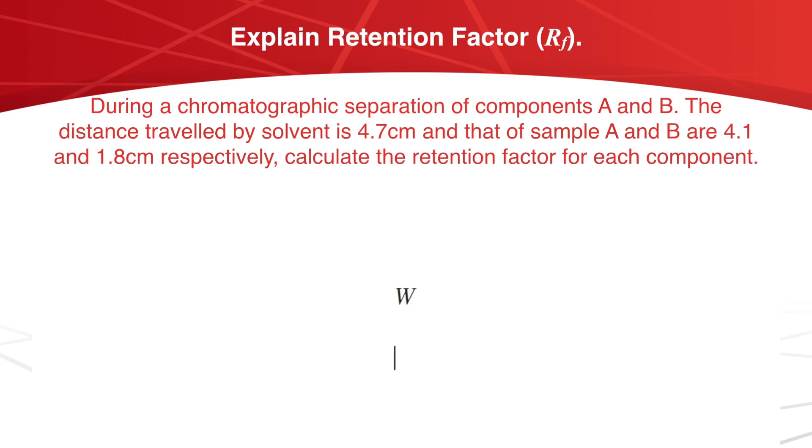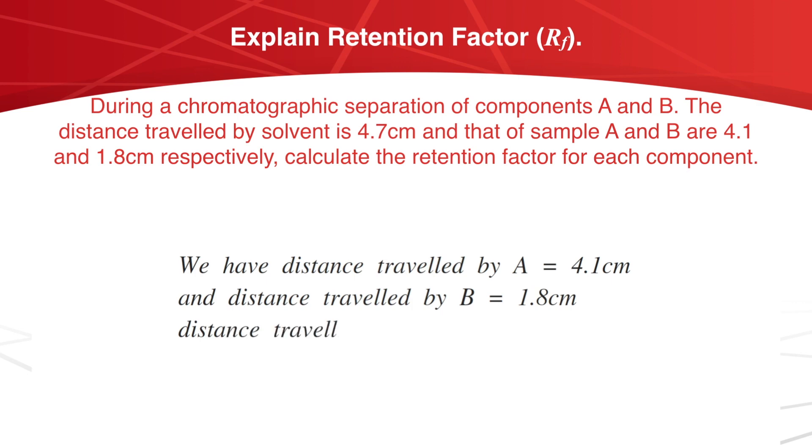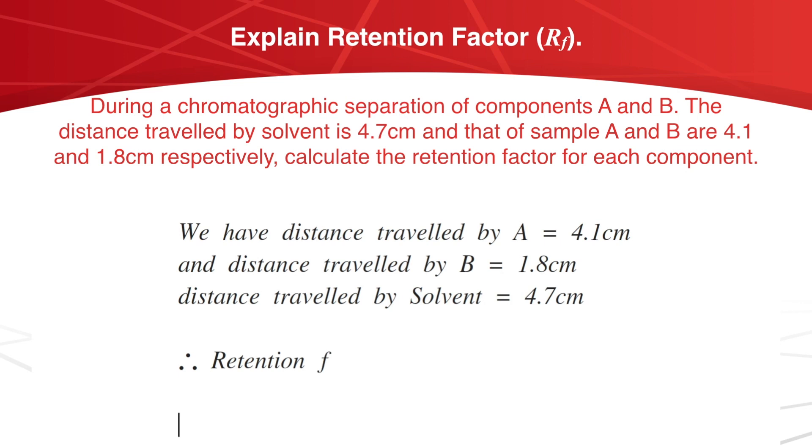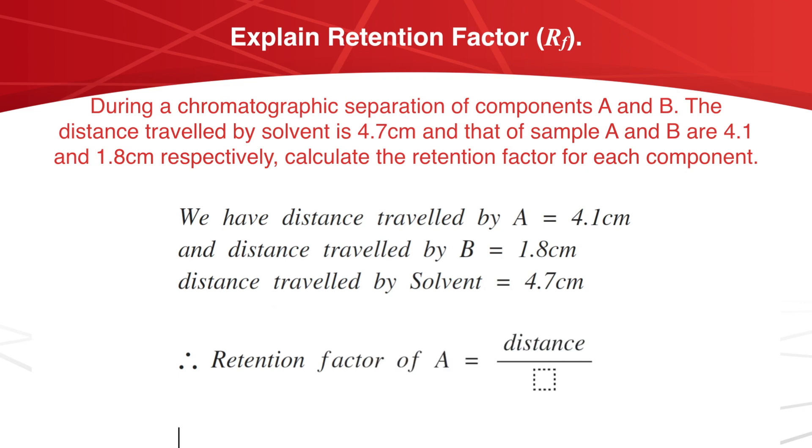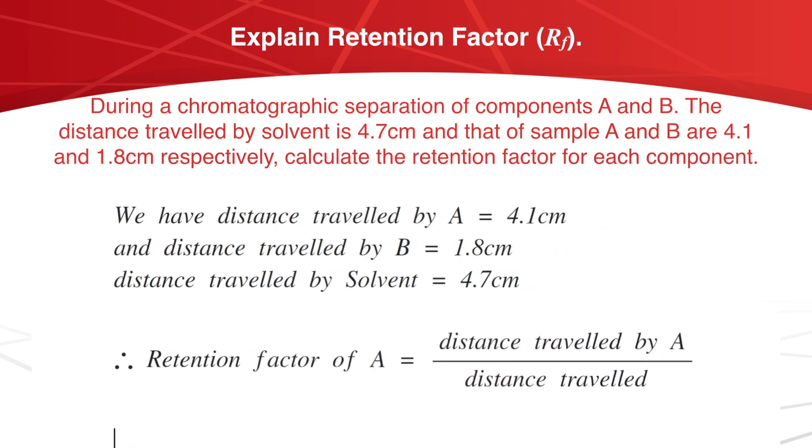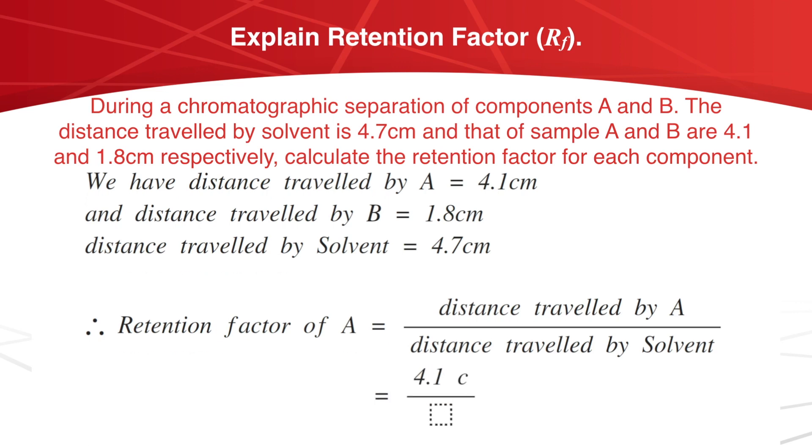In this case, we have distance travelled by A equals 4.1 cm and distance travelled by B is 1.8 cm, and distance travelled by solvent is 4.7 cm. Therefore, retention factor for A component is distance travelled by A divided by distance travelled by solvent, which is 4.1 cm divided by 4.7 cm, which comes to 0.872.